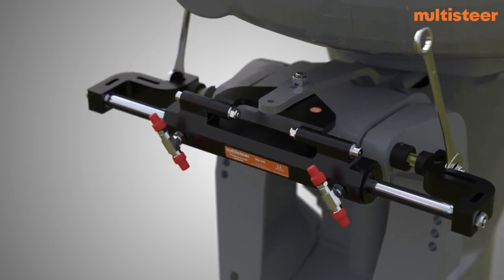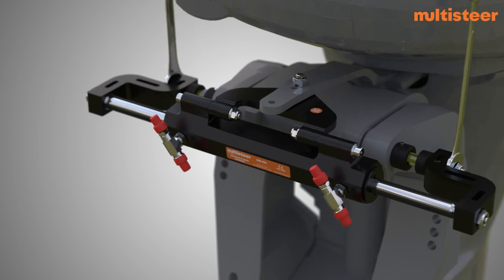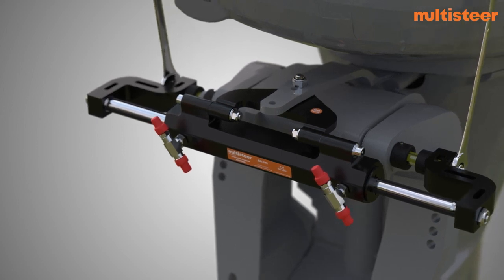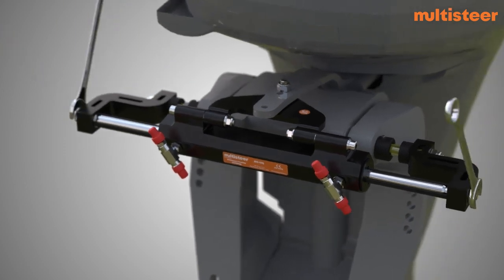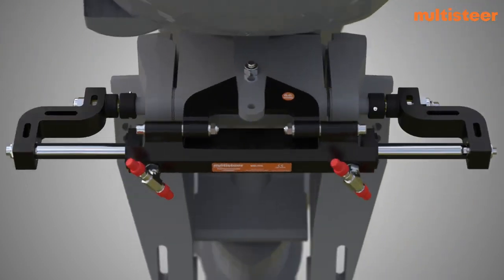Grease the nylock nut threads with any anti-seize grease. Insert the washers and nylock nut at the end of the piston and support rod and tighten them. Adjust the space on the tilt tube by tightening the mounting spacers until the clearance between tilt tube and spacers is eliminated.